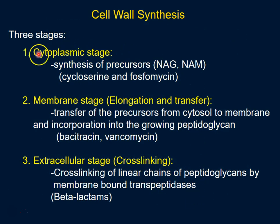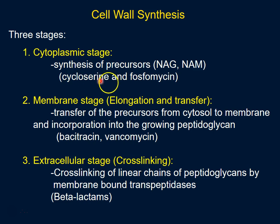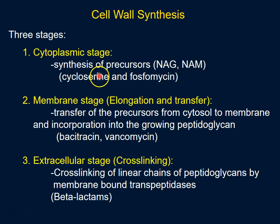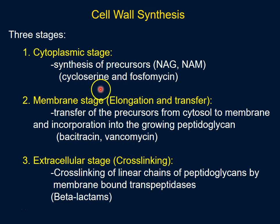Cell wall synthesis proceeds in three stages. The first is the cytoplasmic stage, where the NAG and NAM glycans are synthesized — so the building blocks are synthesized. There are two antibiotics that inhibit cell wall synthesis at this stage: cycloserine and phosphomycin.